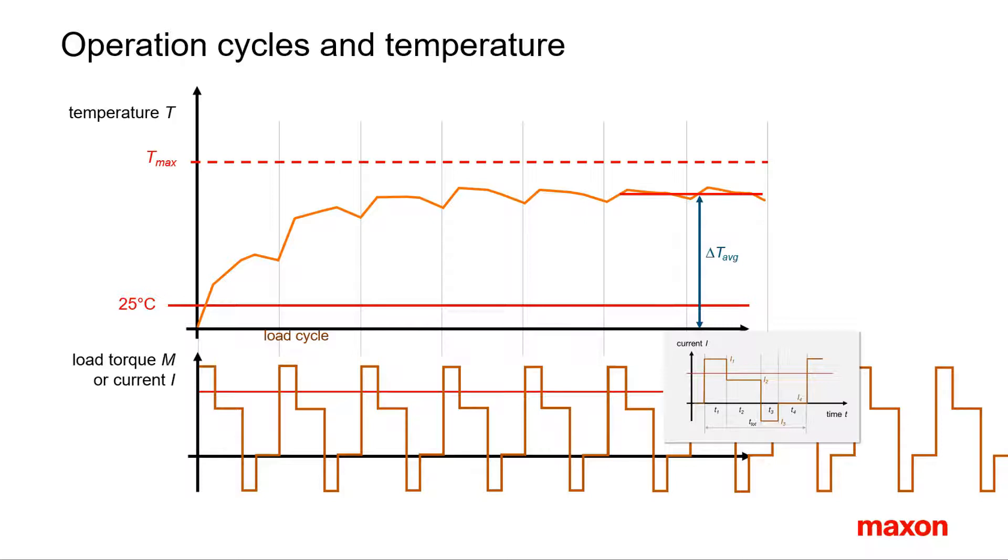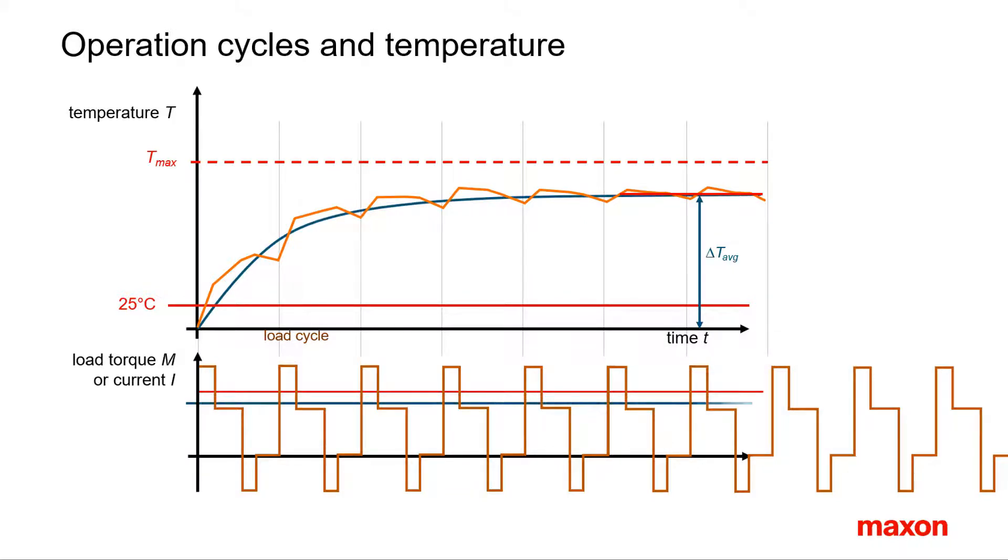It's this average end temperature we are interested in. And, as we have seen, corresponding to the average temperature, there must be a permanent current value that generates the same average heating. This is the meaning of the RMS current. It's the mean current value that creates the same temperature increase as permanently repeating a given operation cycle.